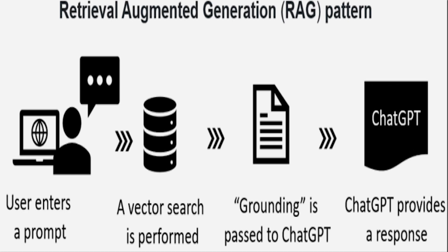This is typically the RAG pattern, where these models are going to understand what is our intent from that question, and then figure out what search it has to run based on Azure AI Search, then bring the result and use that result for grounding purpose for whatever response it is going to generate. So this is what we are going to see in this demo.